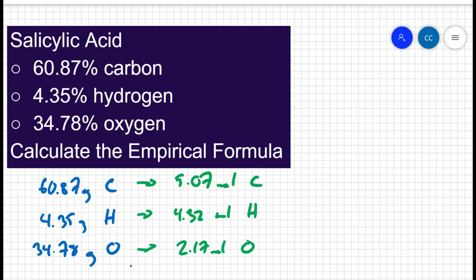So I've expressed my percentages as grams, I've converted each of those to moles, and now we want to set them to the simplest ratio. And how we do that is we divide by the smallest number. In this case, the smallest number of moles is 2.17, so I'm going to divide all of these by 2.17.